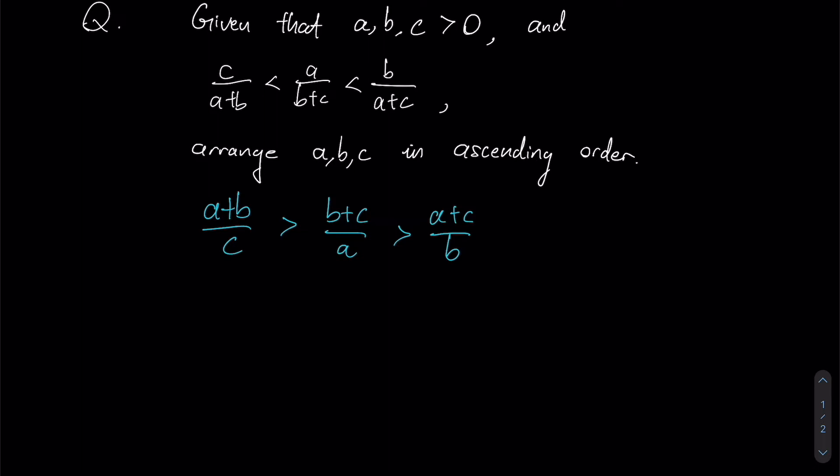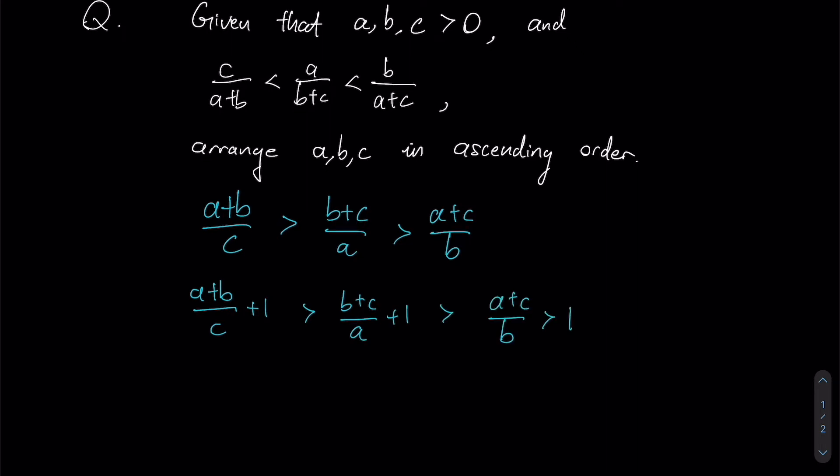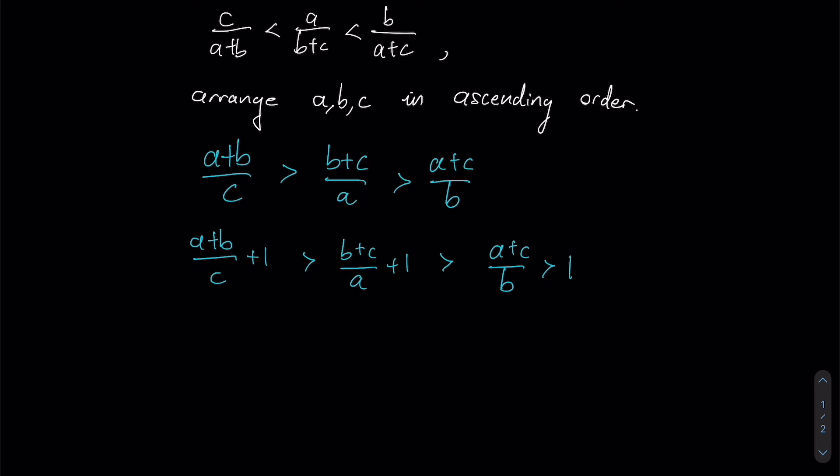Whenever we have three variables like this where all my expressions look pretty similar, we're going to try and make either the numerator or the denominator the same so we could start to compare. So our next step could be to add one to each of these fractions over here. And doing so, our values would still remain more or less the same. My relationship, or rather my inequality, still holds.